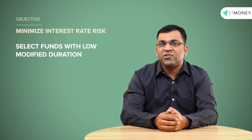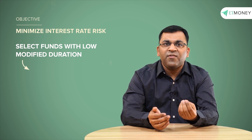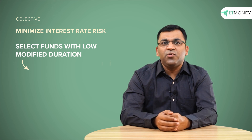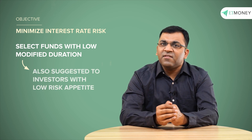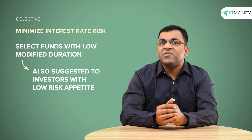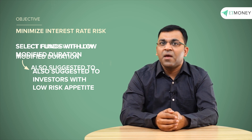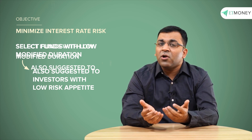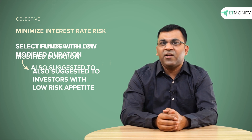But if the fund manager expects a drop in interest rates, he or she is likely to keep the modified duration high. Another application of modified duration is your own selection of debt funds. If you want to minimize interest rate risk, it makes perfect sense to select funds with a low modified duration — by low, I mean around 1 year, maybe 1.5 years, but definitely within 2 years. Investors with a low risk appetite should stick with debt funds which have a low modified duration. But if you have a moderate or higher risk appetite, you can opt for a higher modified duration.